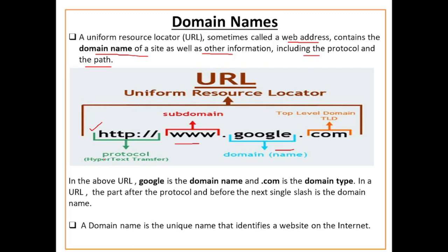Now, in the above URL, google is the domain name and .com is the domain type. इस particular URL में google domain name है और .com जो है वो उसका type है — वो बता रहा है कि google कौनसी website है, commercial website है।